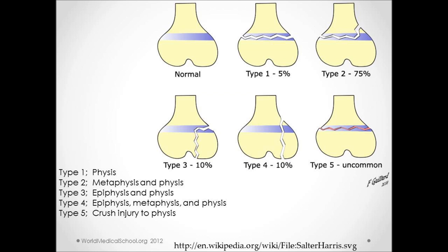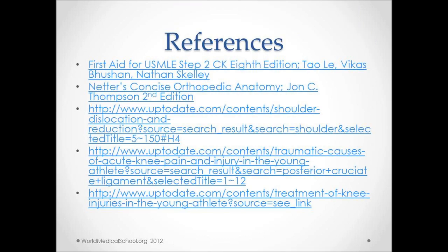A way to remember the different types of Salter-Harris fractures is the mnemonic SALTR. S is type 1 for slipped, A is type 2 for above the physis, L is type 3 for lower or below the physis, T is type 4 for through the physis, and R is type 5 for rammed. That concludes this lecture on common orthopedic injuries. Thank you.